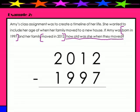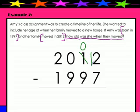Once again, we start with our ones column. We see that there's more on the floor. We need to go next door, get ten more. So we take away from the tens place. The one becomes a zero. Give the ten to the ones. Twelve minus seven equals five.